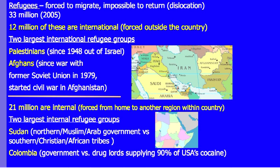The two largest international refugee groups according to Rubenstein are the Palestinians, who have been forced out of Israel since 1948 and have lived in neighboring countries like Lebanon, Syria, and Egypt, and the Afghans, who fled between Iran and Pakistan due to the Soviet Union's invasion of Afghanistan starting in the late 1970s and into the 1980s.